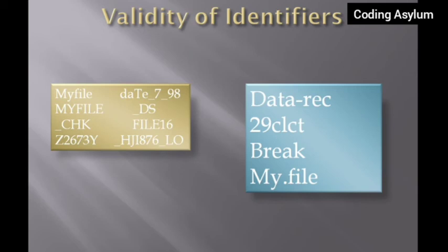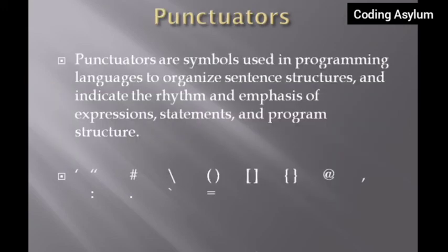The fourth invalid identifier is 'my.file' — it is invalid because it contains a dot, which is a special character. Only an underscore is allowed in identifiers; no other special character is permitted.